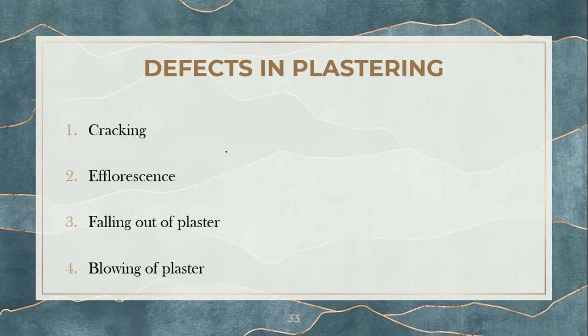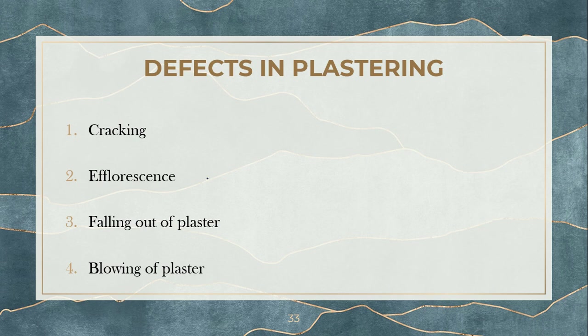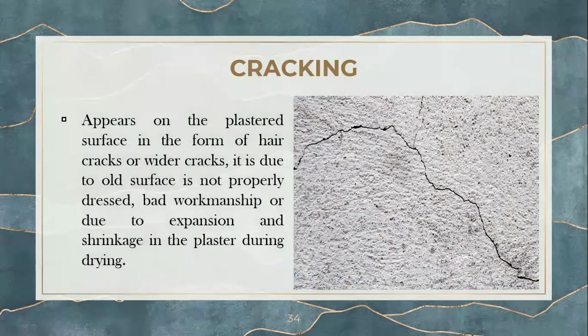Now let's see what are the defects in plastering if you do not plaster properly. We have seen what is plaster, the different materials used, and the different kinds of plastering and finishing available. If you do not perform the plastering properly, obviously there will be defects. There are four kinds of defects in plastering: cracking, efflorescence, falling out of plaster, and blowing or blistering.